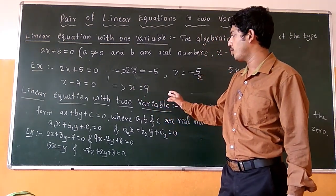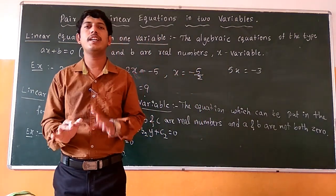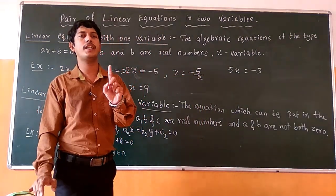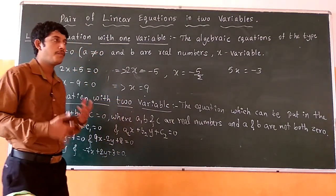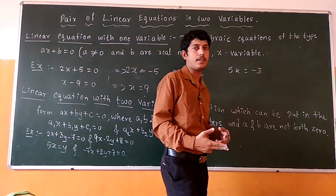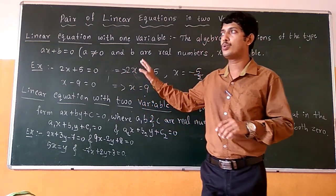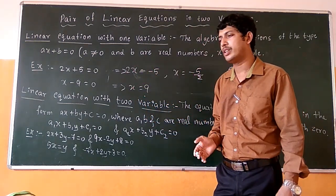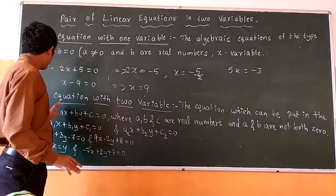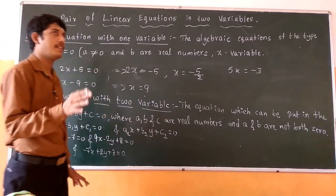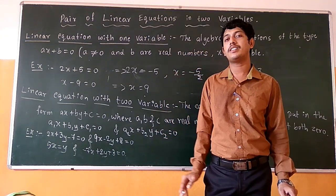Now we have another one — that is linear equation in two variables. We just learnt about linear equation in one variable, where we are considering only a single variable term. In linear equation in two variables, we have to use two variables in the equation apart from the constant term. The constant term may be 0 or a non-zero value, it does not matter. The general form of the linear equation in two variables is ax plus by plus c equals to 0.